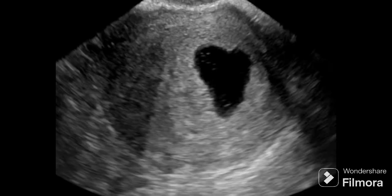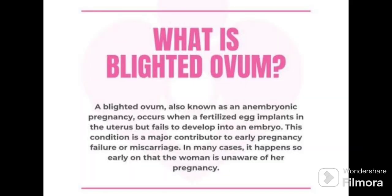This is another case of blighted ovum in which pregnancy has occurred but there is no growth. Now I will tell you what blighted ovum is. It is also known as anembryonic pregnancy. It occurs when a fertilized egg implants in the uterus but fails to develop into an embryo.